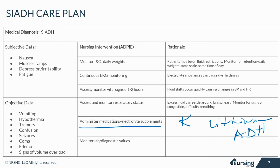Finally, hyponatremia is a hallmark sign of SIADH, so be sure to monitor lab values like serum sodium, potassium, chloride, serum concentration or osmolality, and urine specific gravity.